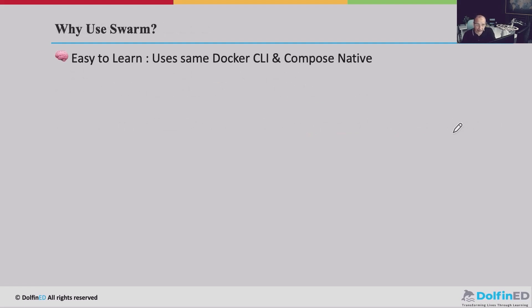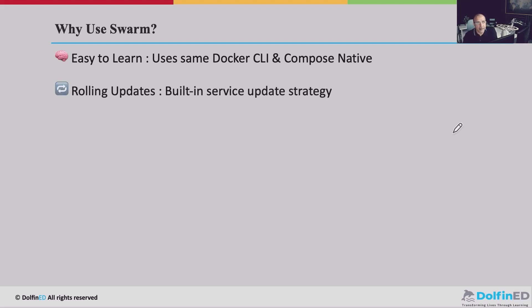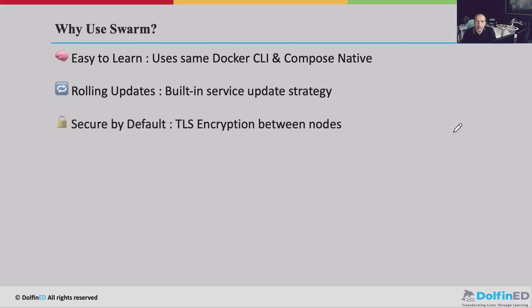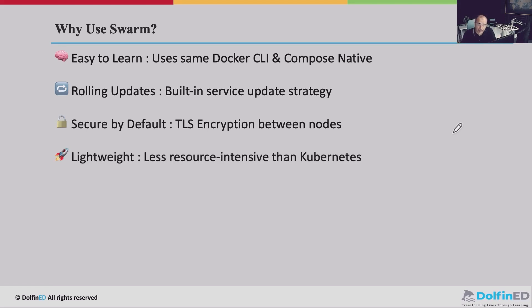Why use Docker Swarm? It's easy to learn, uses the same Docker CLI and Compose natively, and has a rolling updates feature — when a new version is available, you can roll it out using rolling updates. It's secure by default with encryption between nodes for communication among them, and it is lightweight, meaning less resource-intensive compared to Kubernetes.